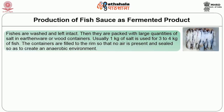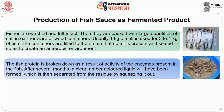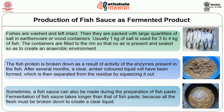To produce fish sauce, the fish are washed and left intact, then packed with large quantities of salt in earthenware, cooking ware and wood containers. Usually 1 kg of salt is used for 3 to 4 kg of fish. The containers are filled to the rim so that no air is present and sealed to create an anaerobic environment. The fish protein is broken down by the activity of enzymes present in the intestine. After several months, a clear amber colored liquid is formed which is separated from the residue by squeezing. Fermentation of fish sauce takes longer than that of fish paste because all the flesh must be broken down to create a clear liquid.